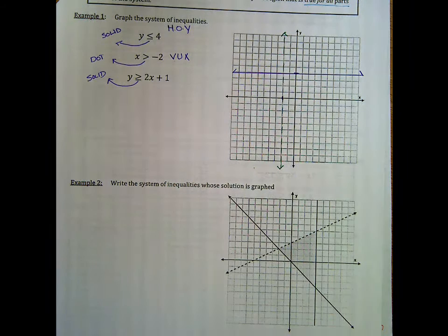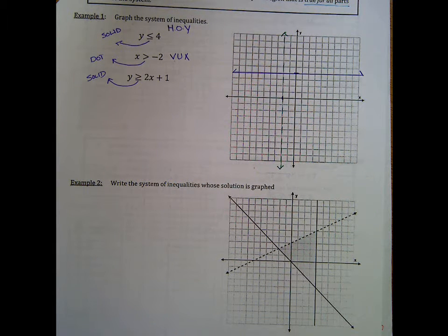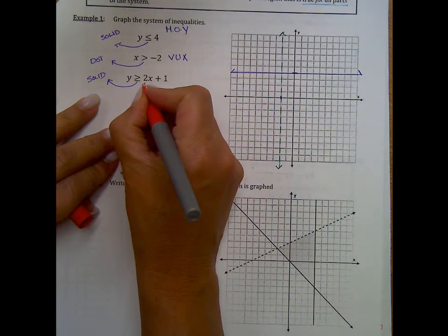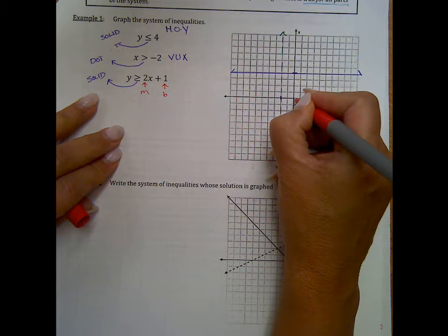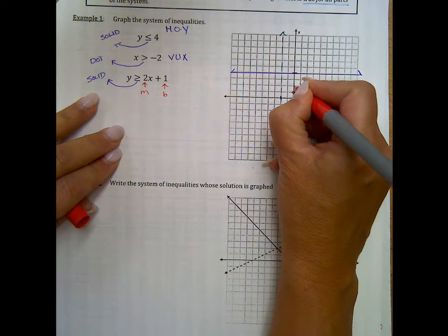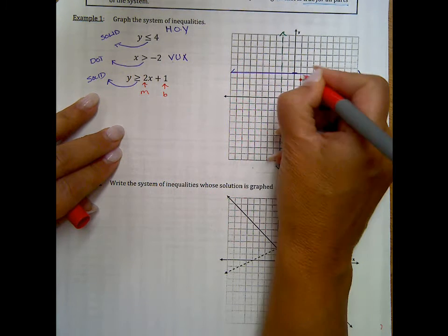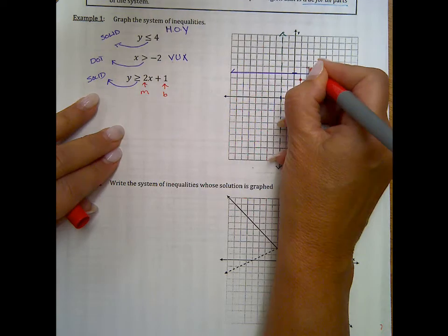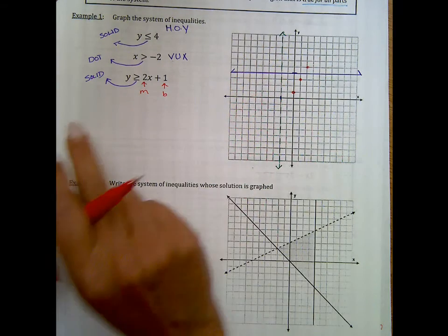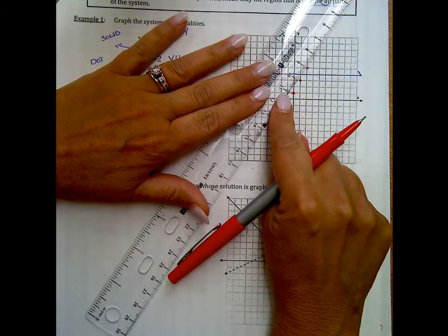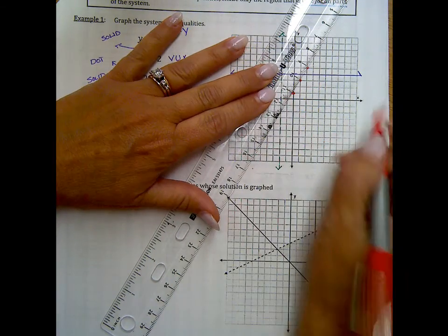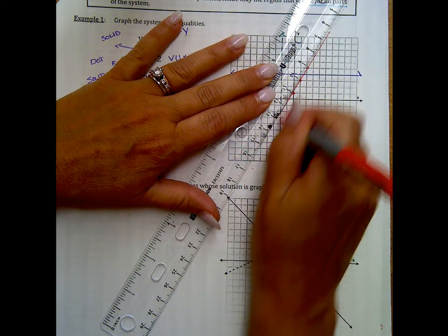And then the last one: y is greater than 2x + 1. This is y = mx + b, so there's our m, there's our b. Our b is at 1. We're going to rise 2, run 1, rise 2, run 1. This is a solid line because it is equal to.